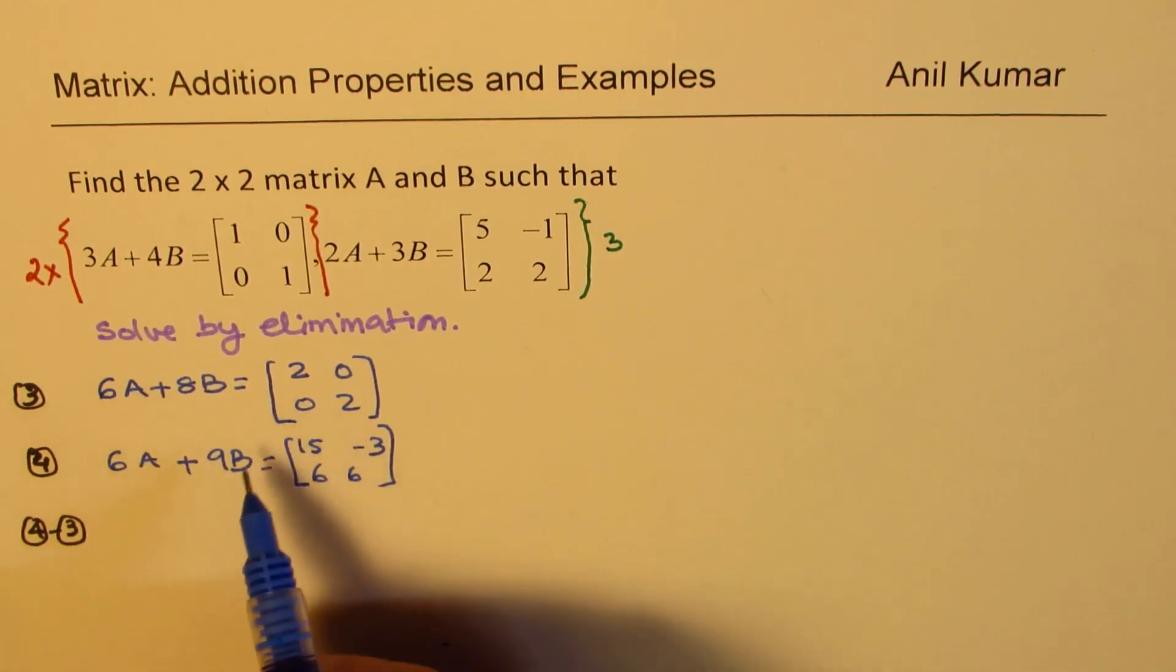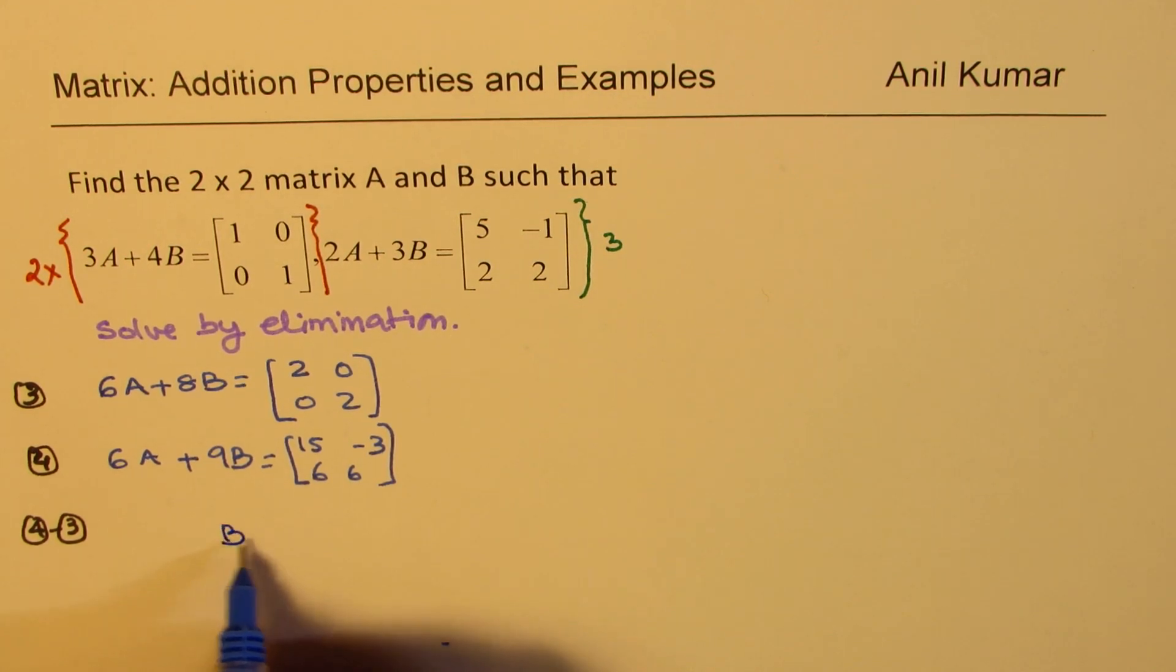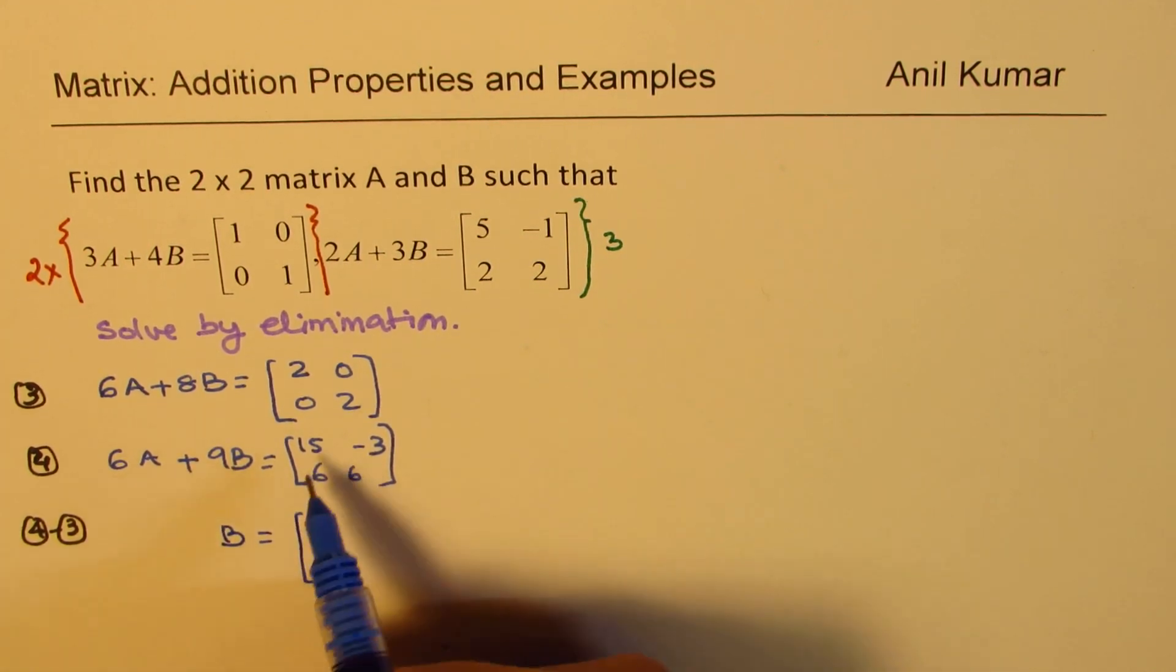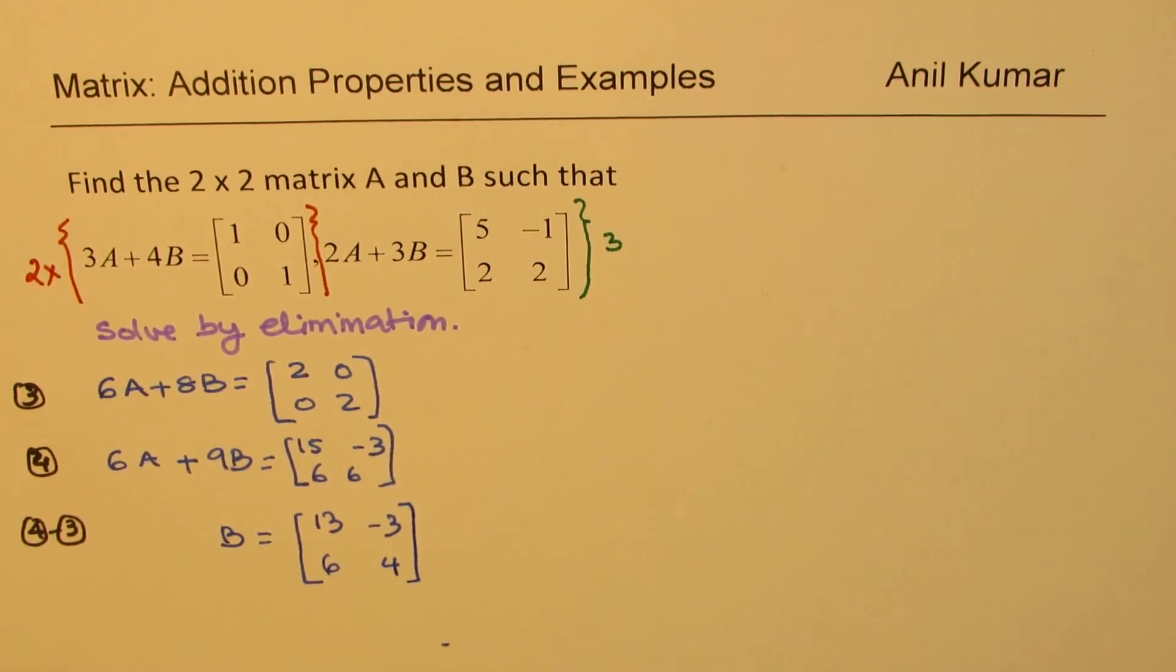So 6A, 6A will cancel out. 9B minus 8B will result into B equals to what? 15 minus 2 which is 13, minus 3 minus 0 is minus 3, 6 minus 0 is 6, 6 minus 2 is 4. So we get one of our matrix B which is a 2 by 2 matrix as expected and that's what it is.